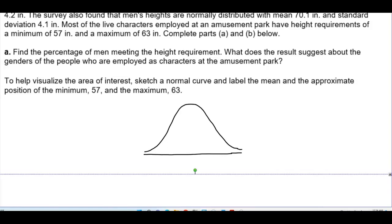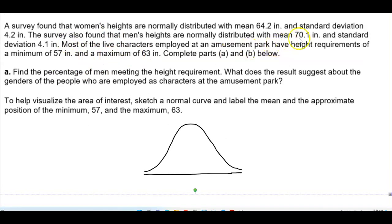Since we're dealing with men, the mean is 70.1. We know that there's a minimum value of 57, so x1 is equal to 57. We also have 63, which is going to be below the mean, so x2 is equal to 63. What we're looking for is the shaded area in between those two values.